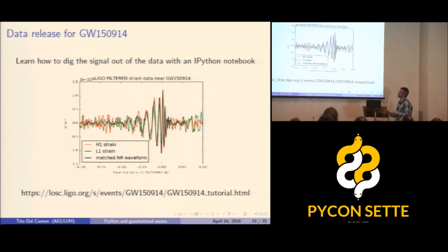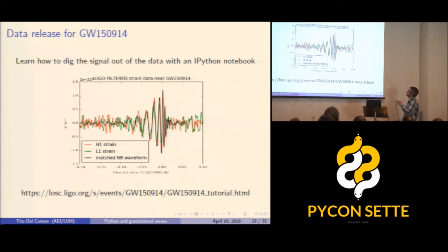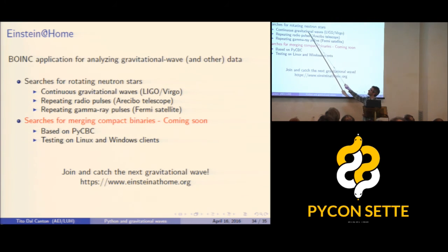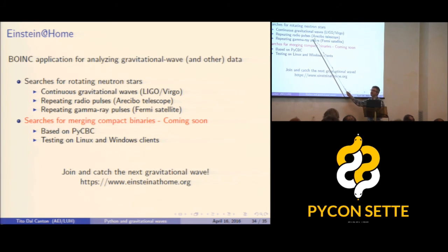You can go to a website and download the data containing the event. There is an IPython notebook showing how to filter and plot the data so you can see it with your own eyes. I also want to advertise Einstein@Home — a BOINC application from my institute for analyzing gravitational wave data, mainly used for searching for continuous gravitational waves and also radio and gamma ray data. Now PyCBC is being tested on BOINC and runs on Linux and Windows — so join, and you may find the next gravitational wave.